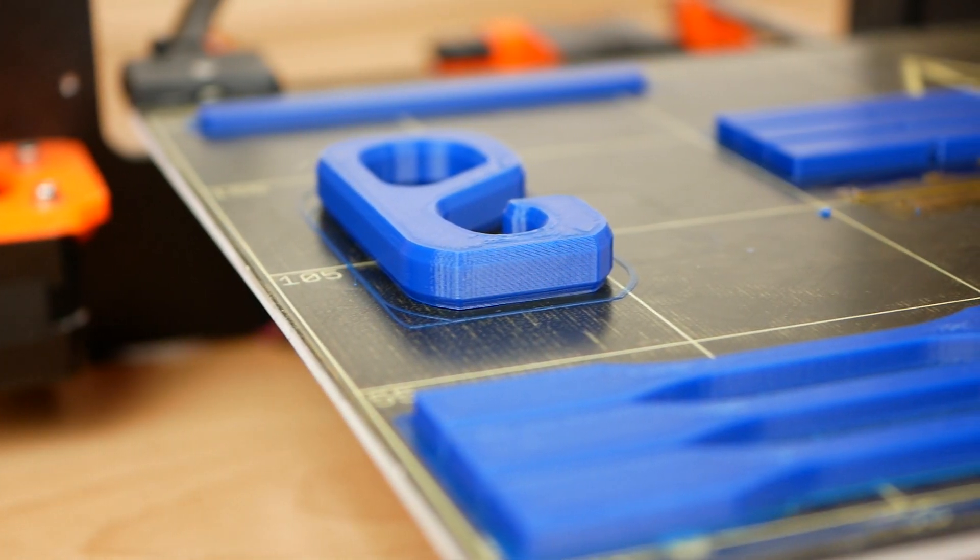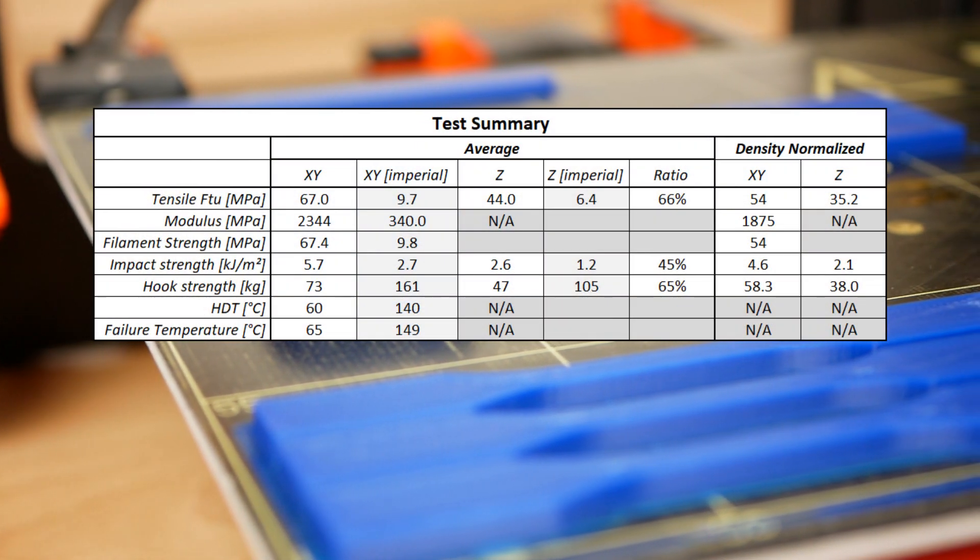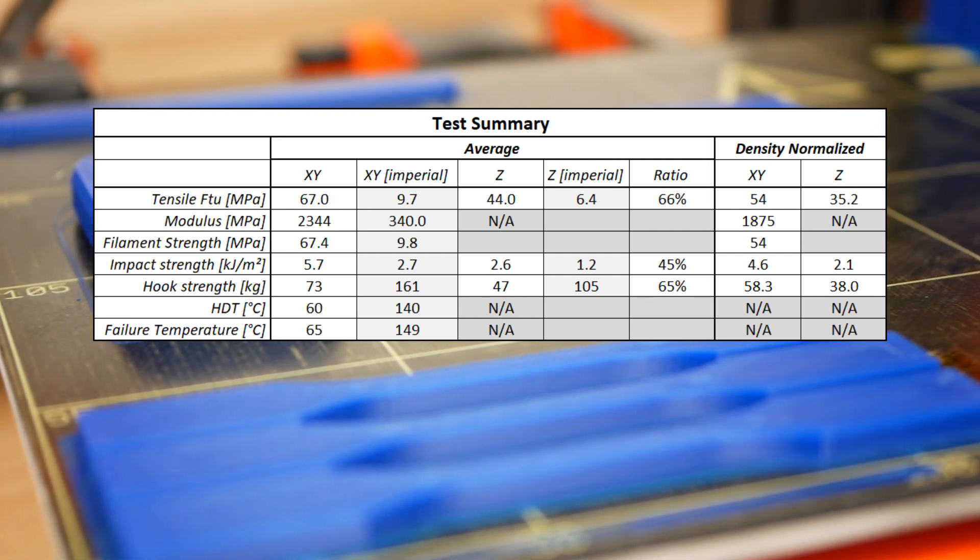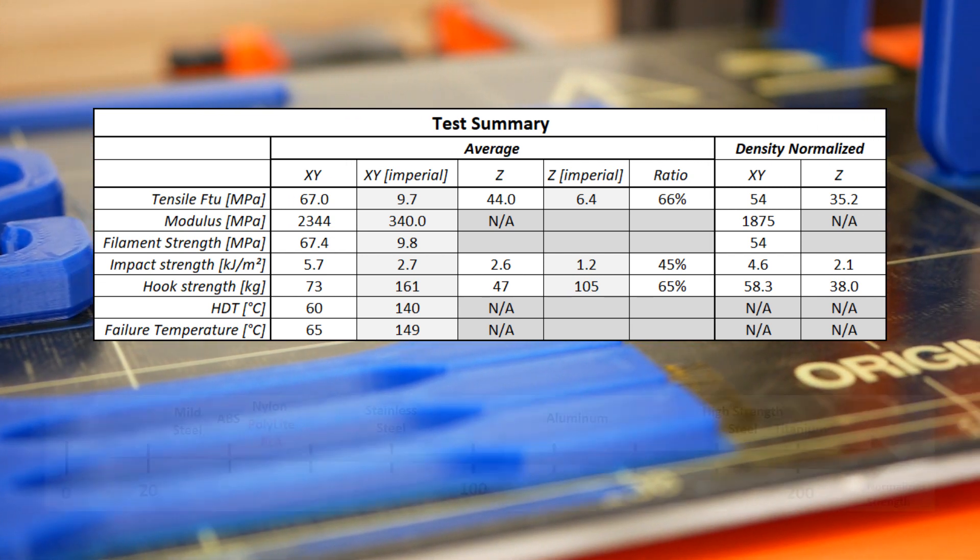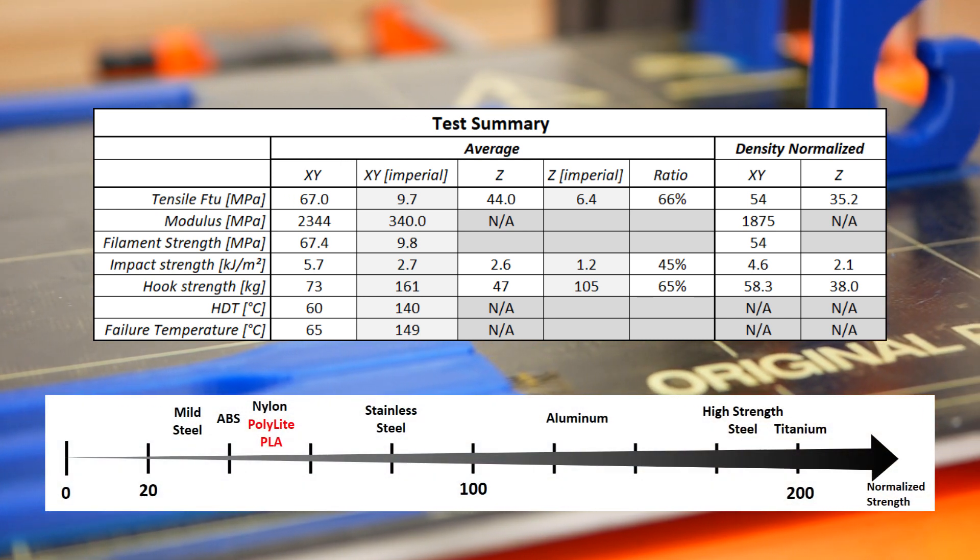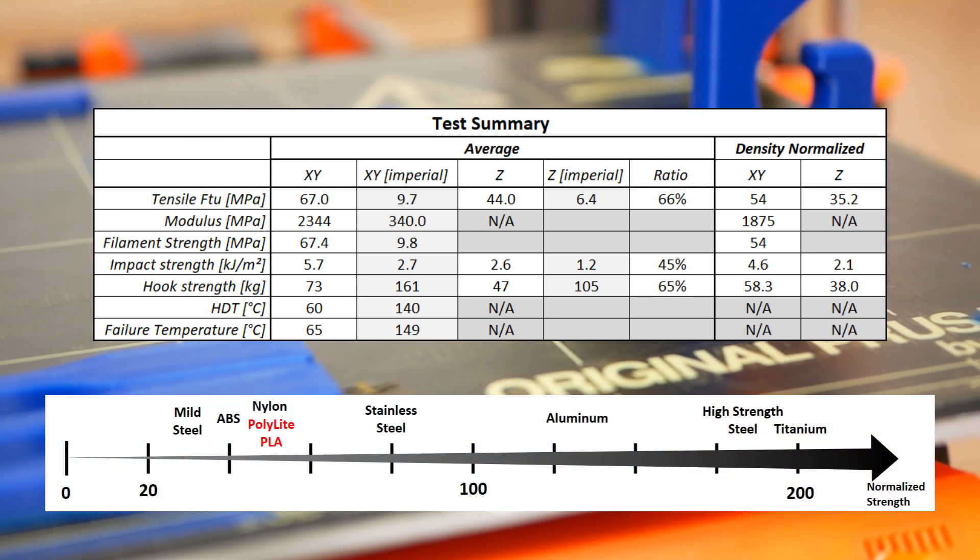Due to PLA's high density of 1.25 grams per cubic centimeter, it's interesting to keep the normalized strength values in your head because PLA is, for example, around 20% heavier than ABS.